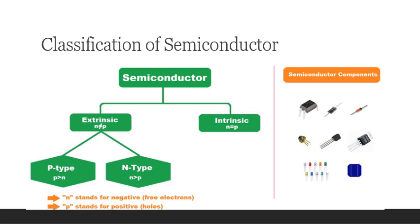We can classify the semiconductor into intrinsic and extrinsic. The extrinsic semiconductor can be further subclassified into P-type and N-type. Let us discuss about the classification in detail now.